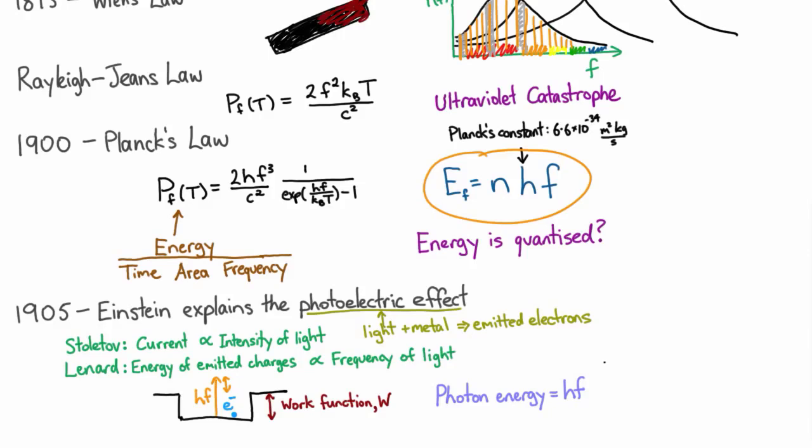So if we make a plot of the kinetic energy of the emitted electrons versus the frequency of the incident light, what we'd expect to see for low frequencies, where we didn't have enough energy to overcome the work function, is that there would be no electrons coming out. So they'd have no kinetic energy, no electrons.